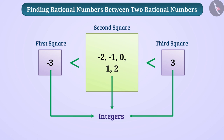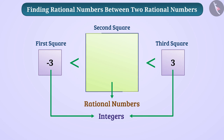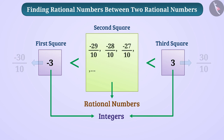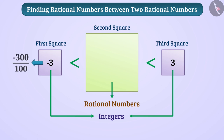Now, if we were to write the rational numbers between minus 3 and 3 in the middle square, what would they be? We can write minus 3 as minus 30 divided by 10, and similarly 3 as 30 divided by 10. We can also write minus 3 as minus 300 divided by 100 and 3 as 300 divided by 100.